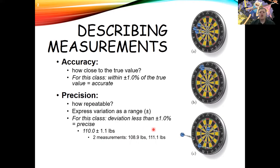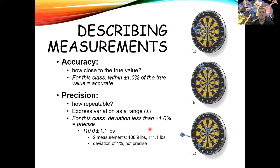For this class, we'll call something precise if it has a range of less than plus or minus 1%, which depends on context. The value 110 plus or minus 1.1 pounds: 1.1 is one percent of 110, so it's right at one percent — not precise. But 110.0 plus or minus 0.5 pounds has a deviation of 0.45 percent, so we would call that precise.